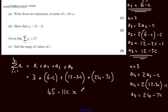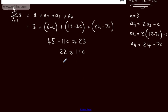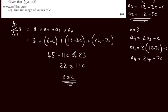So we have 45 - 11c ≥ 23. Subtracting 23 from both sides and adding 11c to both sides, we get 22 ≥ 11c. Dividing both sides by 11, we find that 2 ≥ c, giving us our final answer that c is less than or equal to 2.